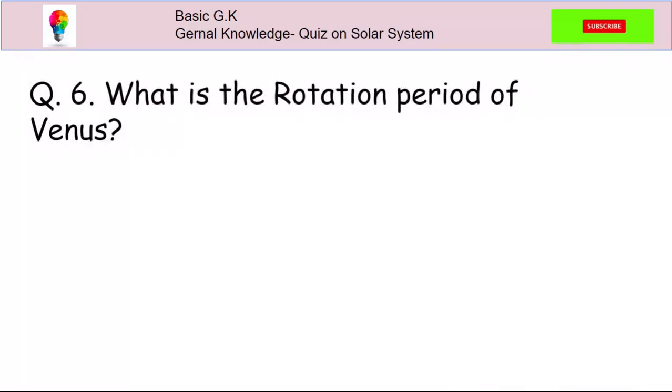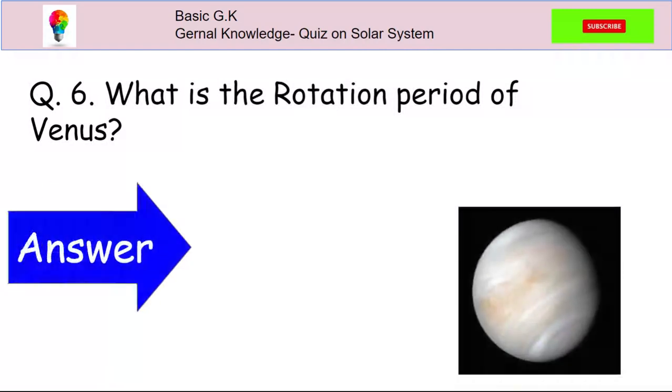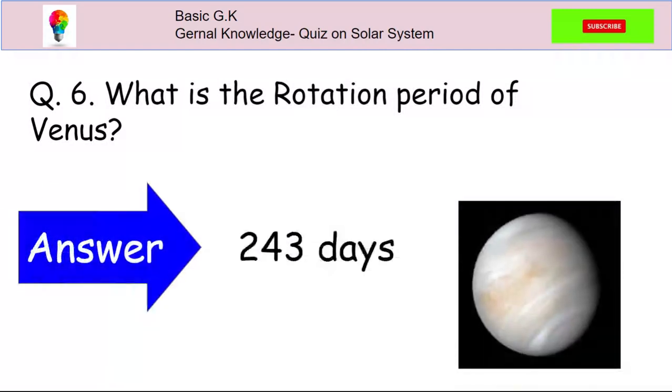Question 6. What is the rotation period of Venus? The answer is 243 days.